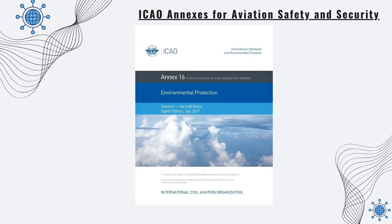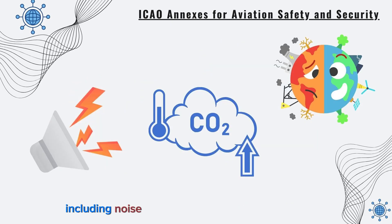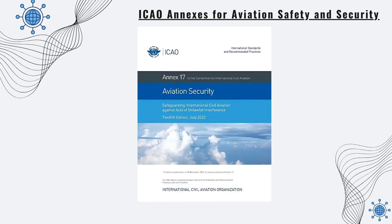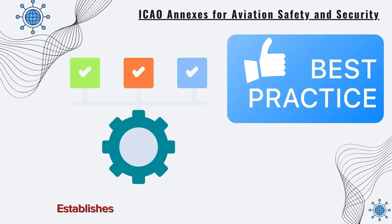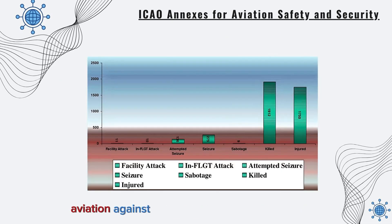Annex 16, Protection of the Environment, addresses the environmental impact of aviation, including noise, emissions, and climate change. Annex 17, Security, establishes standards and recommended practices for the protection of civil aviation against acts of unlawful interference.